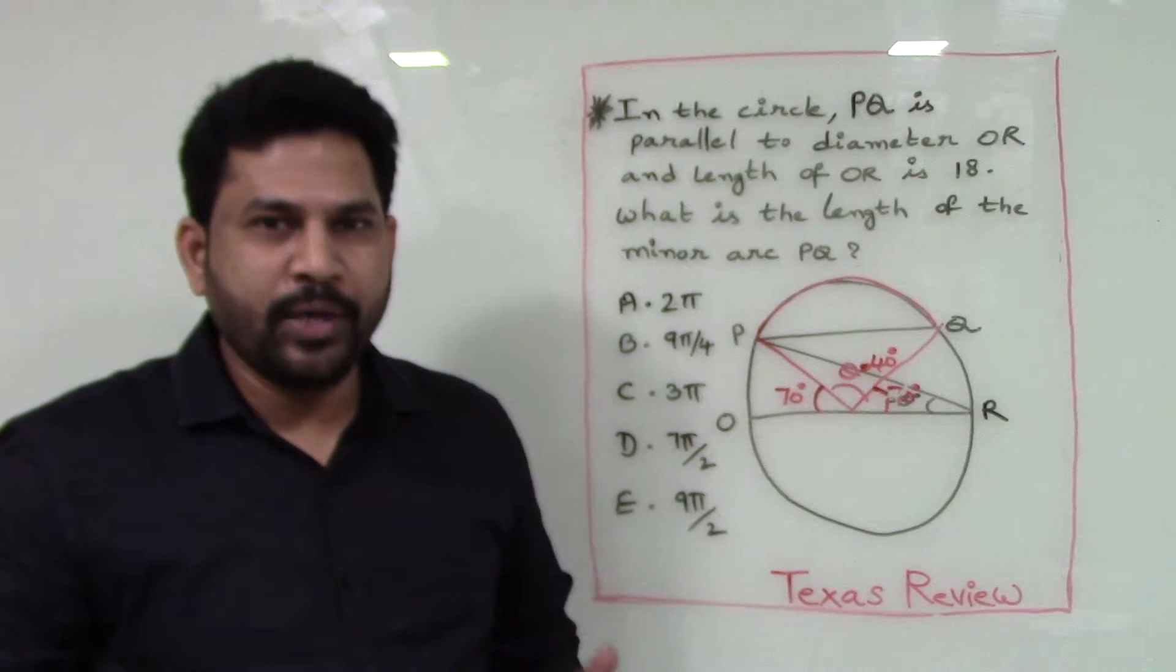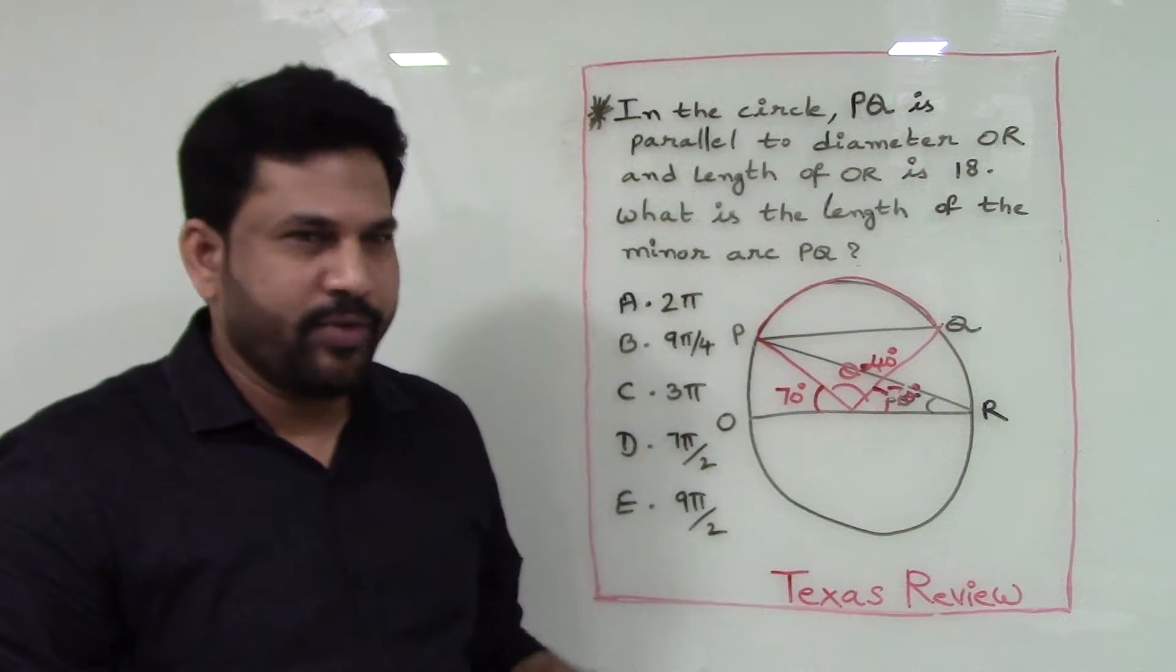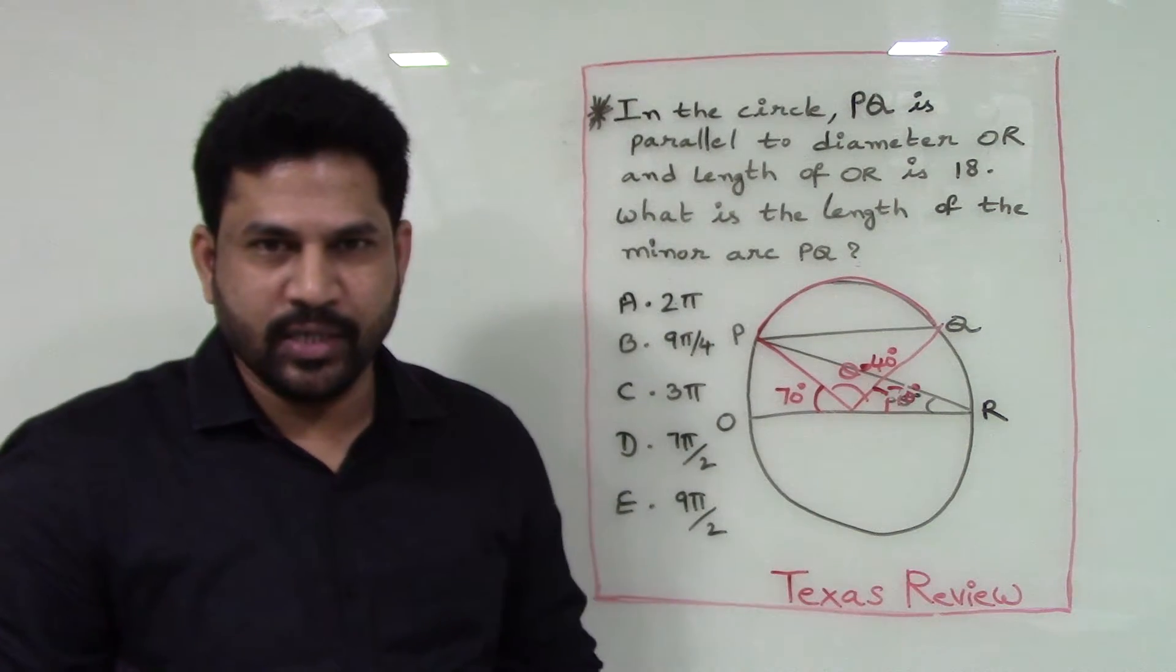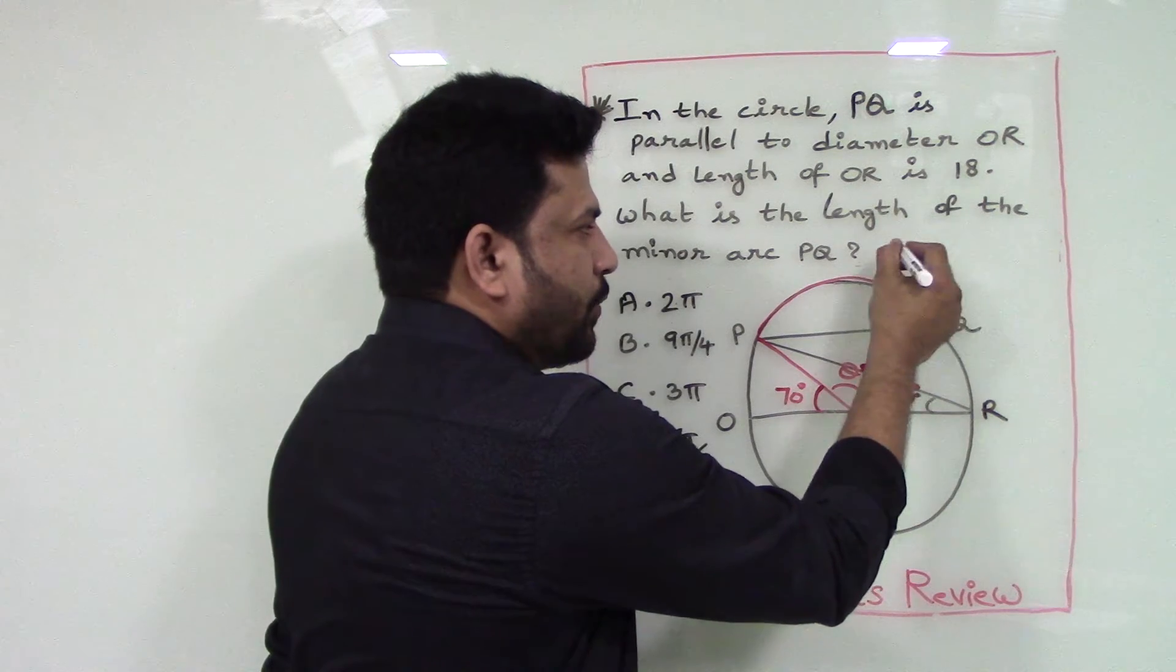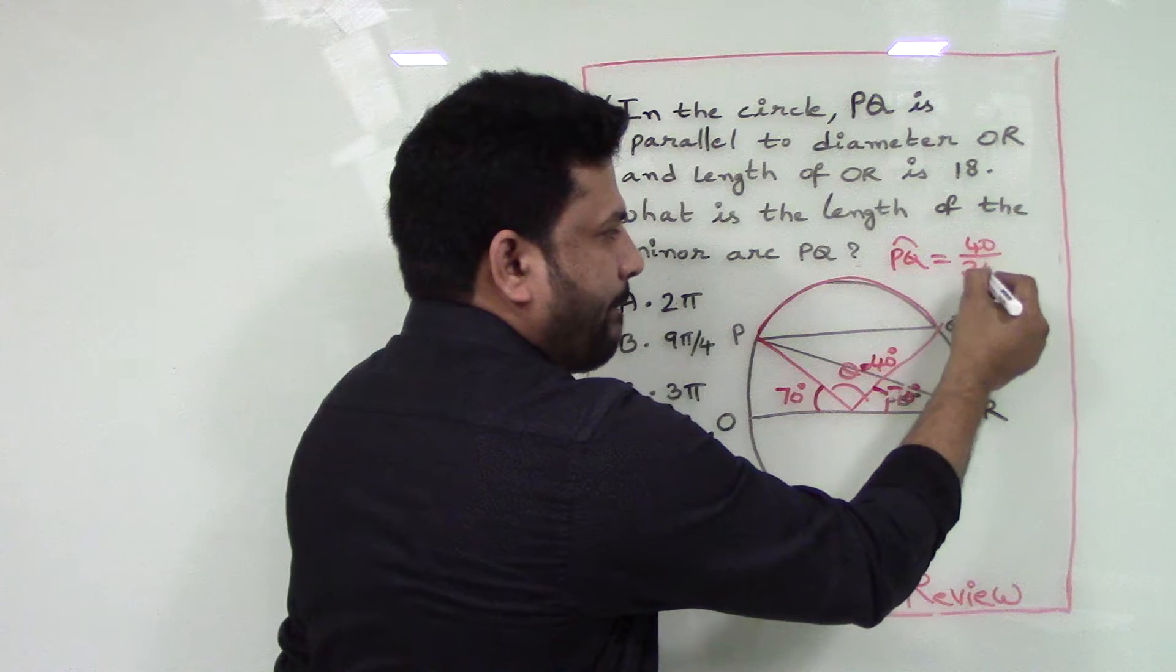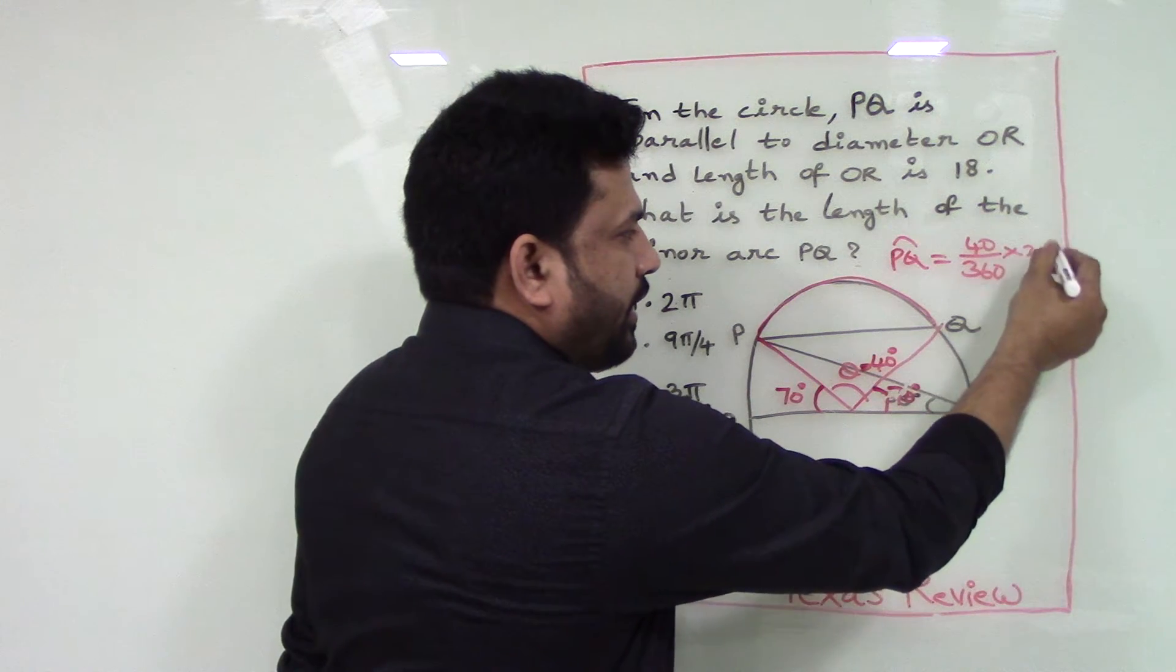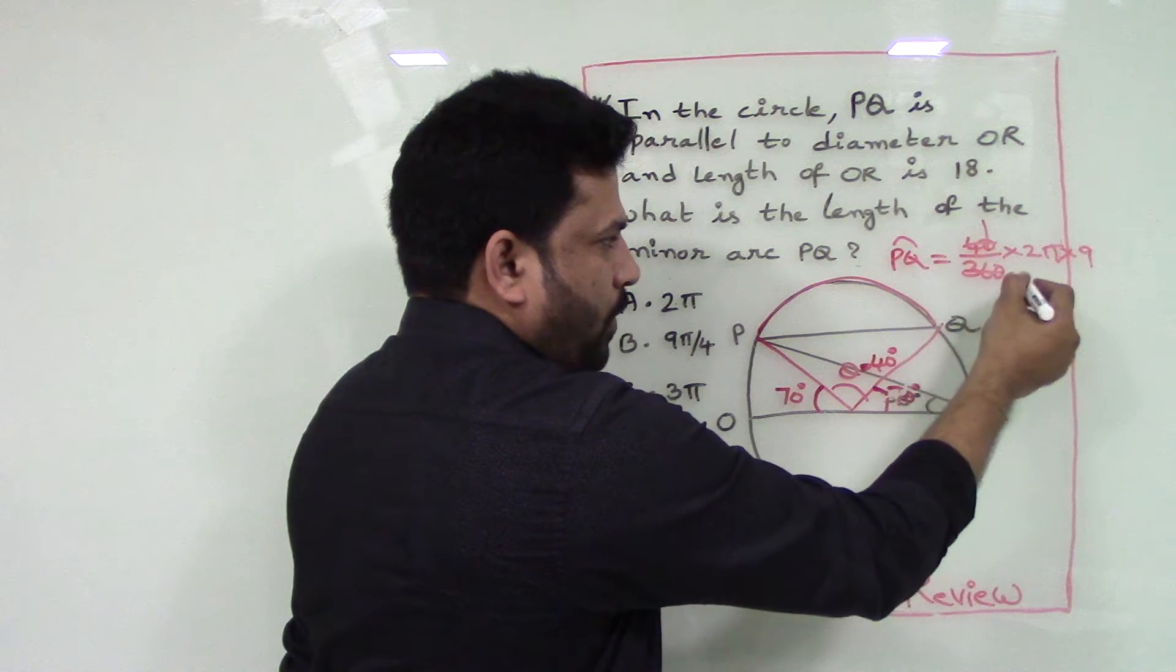So the angle made by the arc PQ at the center of the circle is 40 degrees, and we are given the radius of the circle as 9 units. Hence, the length of the arc PQ is 40 by 360 times 2π times 9, which is 2π units.